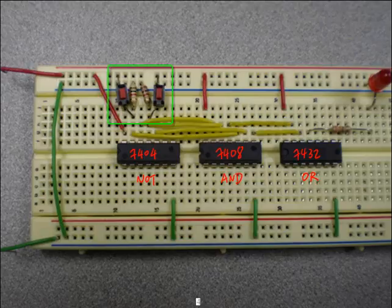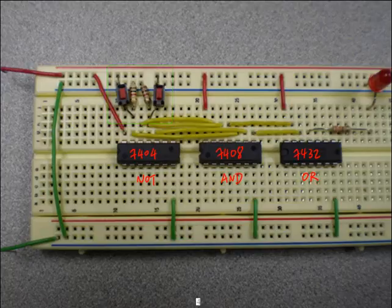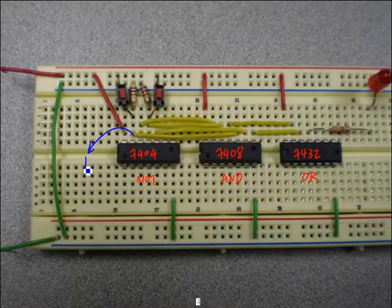Two switches on the top are used to represent the input signals A and B. Switch not pressed is the default, which corresponds to a digital 0. When a switch is pressed, it makes a digital 1.